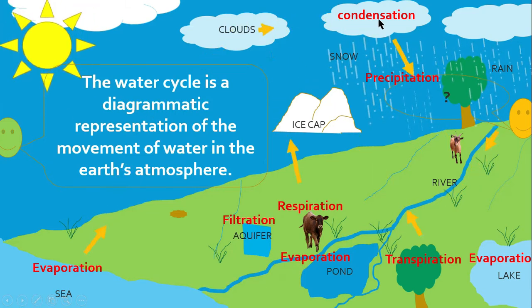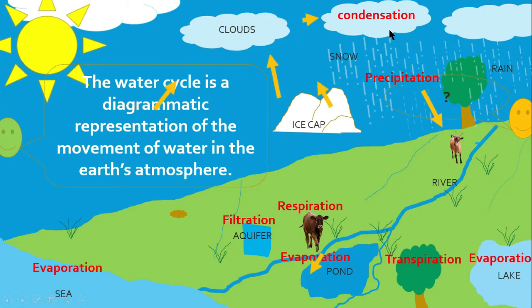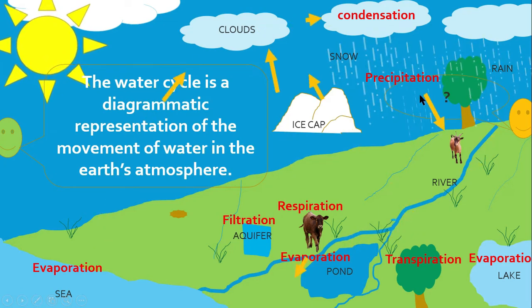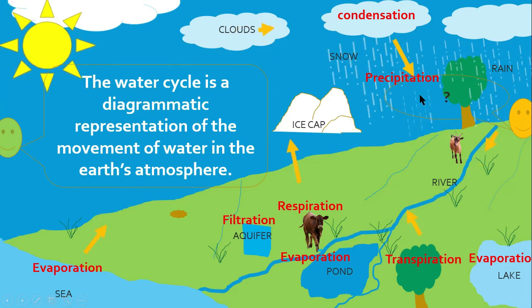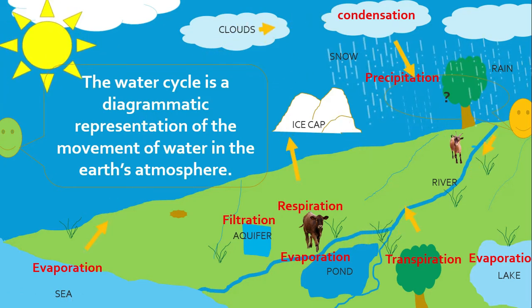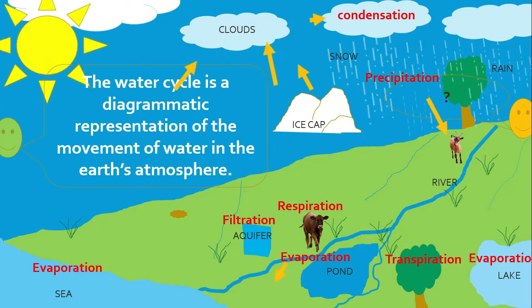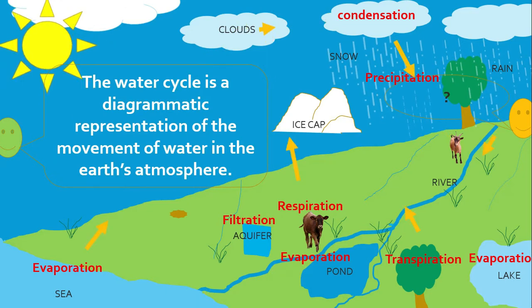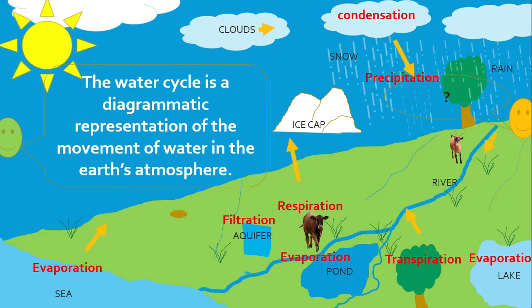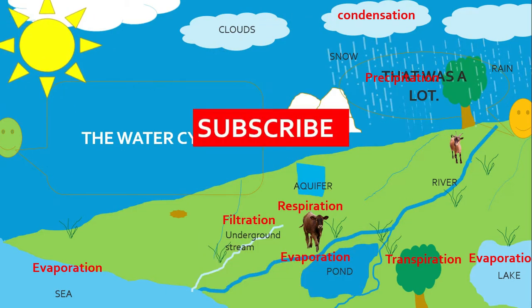Then it gains energy and again returns to the Earth as precipitation. Please view the water cycle explained on my channel for more information. Remember to like,